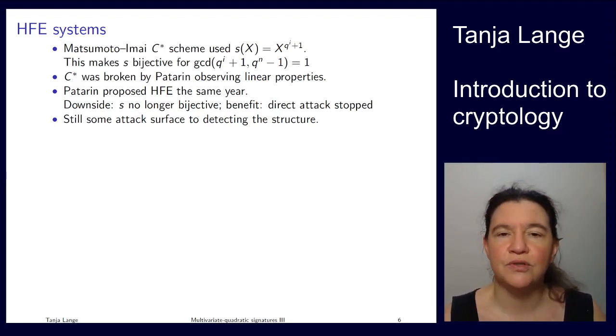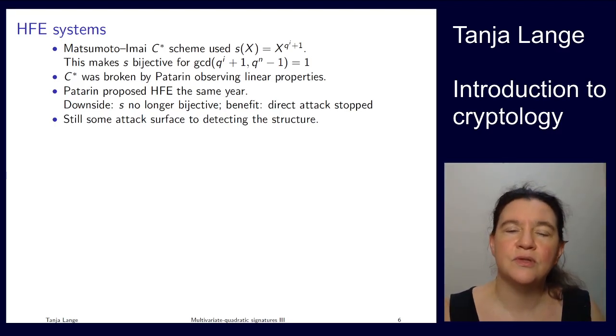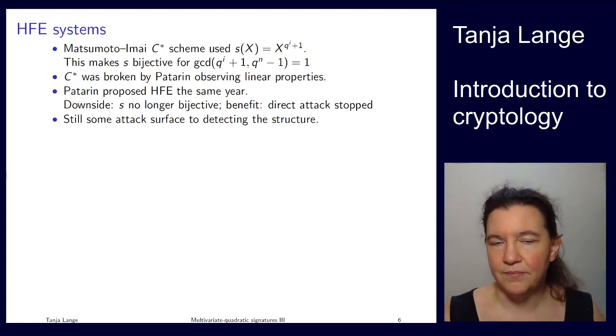Unfortunately, this was too nice to be true. In 1995, seven years later, Patarin showed that you can actually find some linear or bilinear properties in this, which allow him to not exactly reconstruct the original system, but come up with a system which he can solve efficiently to then, for any y, find a pre-image x. Patarin proposed Hidden Field Equations as on the previous slide. The downside is that s is not bijective, but at least it stops these attacks. There are still some linearization attacks, there's still some structure in those HFE systems, but it's a lot harder to break than this C* scheme. C* is mathematically pleasing but too simple. And then HFE, well, you have to deal with the issues that it's not invertible everywhere, but at least the easiest attacks don't work.